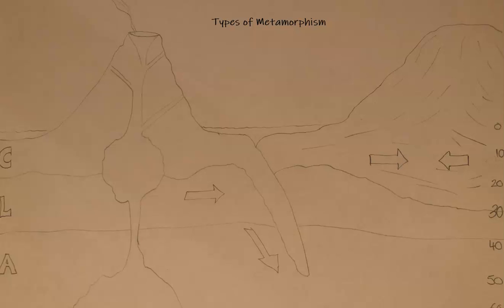I didn't really go to art school, but hopefully you can follow along with the diagram and my annotations and how I label. This video is going to cover the four main types of metamorphism, their locations, and as you can probably see from the diagram, a lot of these locations have overlapping conditions and environments — so how these types connect and interact.